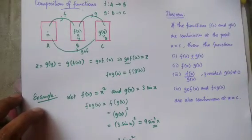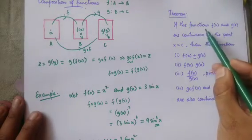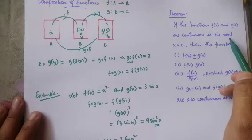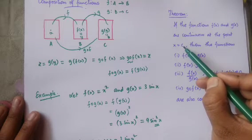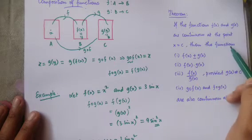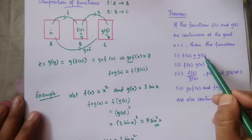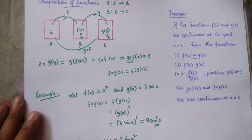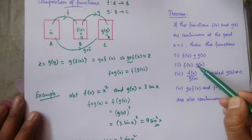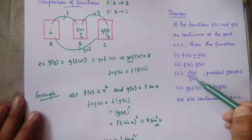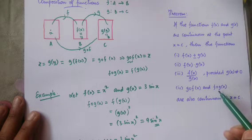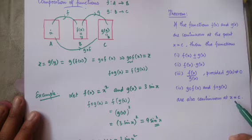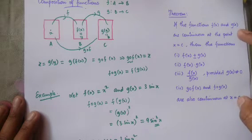The theorem says: if the functions f and g are continuous at a point or at any interval, then the functions f plus or minus g(x), the multiplication of two functions, the quotient of two functions provided g(x) is not equals to zero, and the composition of functions, are also continuous at x equals to c. This is a very important theorem and we need to remember it for solving problems.